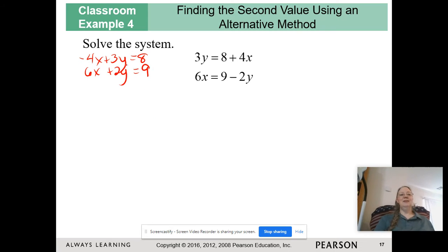Okay, so here are my two equations, and I need to eliminate either the x's or the y's. In this case, let's go ahead and eliminate the x's because one is already positive, one's already negative. Okay, so the smallest number that they both go into is 12, so I am going to multiply the top equation by 3. I'm going to multiply the bottom equation by 2.